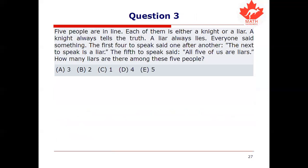How about this one? Five people are in a line. Each of them is either a knight or a liar. A knight always tells the truth; a liar always lies. Everyone said something — nobody stayed quiet. The first four to speak each said, one after another: 'The next to speak is a liar.' And the fifth to speak said: 'All five of us are liars.' With just that information, how many liars are there among these five people?